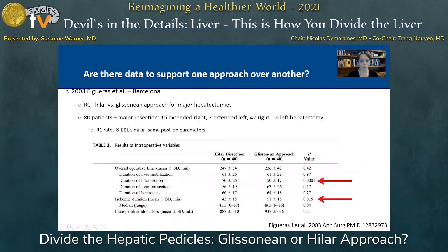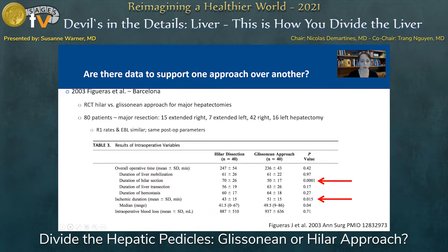Are there data to support one approach over the other? Probably the most robust examination is done by our colleagues in Barcelona in 2003, who did a randomized control trial of Hilar versus Glissonian approach for major hepatectomies. They had 80 patients who underwent major resections — 15 extended right, 7 extended left, 42 formal rights, and 16 formal lefts. They had similar R1 margins, estimated blood loss rates, and similar postoperative lab derangements. In terms of intraoperative variables, Hilar dissection conferred an increased time expenditure in the dissection itself, translating to about a mean 15-to-20-minute increase in overall operative time. However, ischemic duration was actually longer in the Glissonian approach, meaning they Pringled more often and longer with this technique.